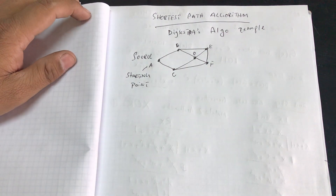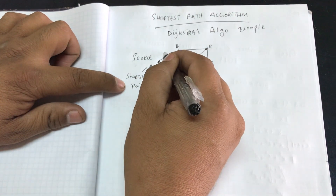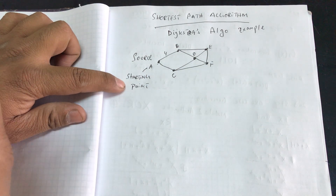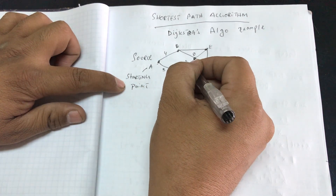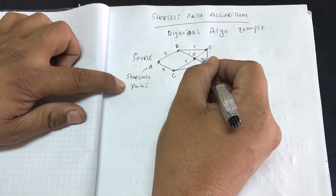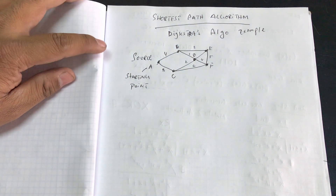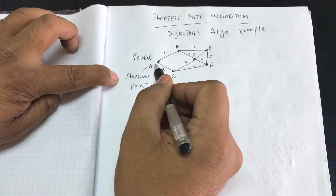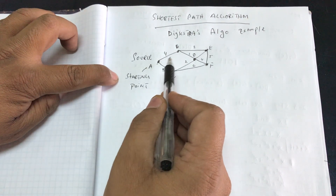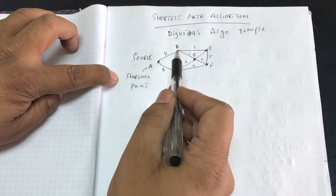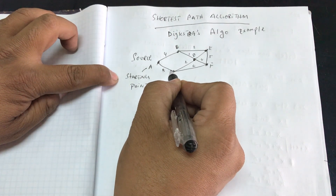Let's define the weight with respect to distance. For example, if I want to go from A to B, the distance I need to cover is four — four kilometers, four miles, four meters, whatever it is. Let's say the other weights are three, two, one, three, four, five, and six — some random distances. From A, I have two direct paths: I can go from A to B and from A to C.